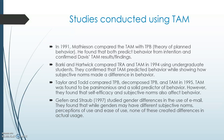Taylor and Todd, in 1995, compared the Theory of Planned Behavior, the Decomposed Theory of Planned Behavior, and the Technology Acceptance Model. Both the Technology Acceptance Model and the Decomposed Theory of Planned Behavior were found to be parsimonious and sound predictors of intention. They further stated that the Decomposed Theory of Planned Behavior provided a fuller understanding of usage behavior, but that the Technology Acceptance Model was preferred if only usage was being evaluated. One key addition of this study was the finding that self-efficacy plays a role in behavioral intentions.